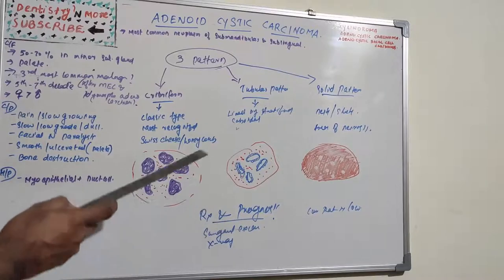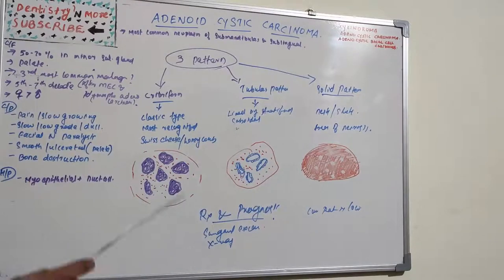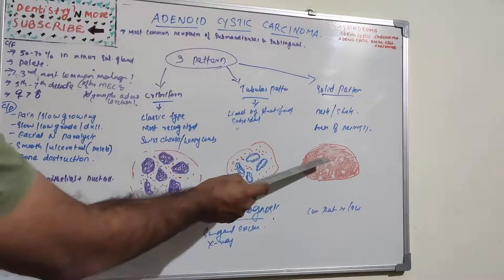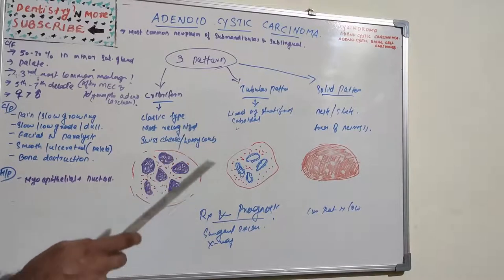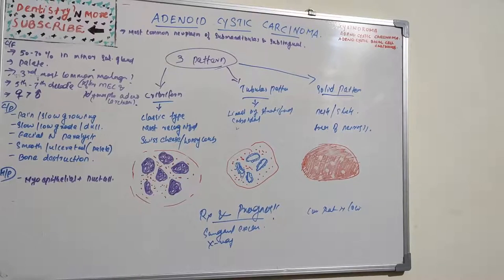The solid pattern consists of groups of cuboidal cells with little tendency toward duct or cyst formation. Instead, cells are arranged in nests or sheets of varying size and shape. Areas of necrosis may be seen, and cellular pleomorphism and mitosis are also observed. This is the undifferentiated pattern.